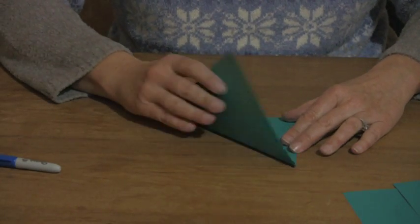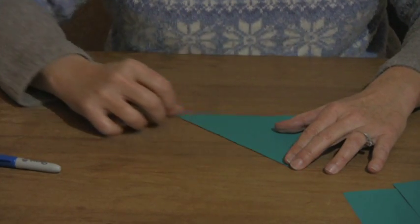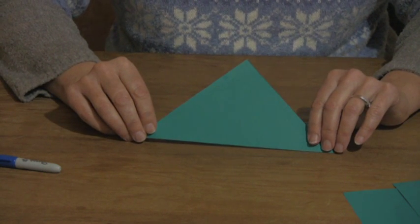So you have your square, fold it diagonally, crease it, and you can cut that off and you have a triangle.